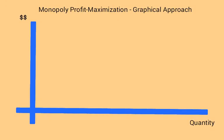Hi everyone. Earlier we looked at monopoly profit maximization by looking at a table. This time we're going to look at a graph and see how we can figure out what quantity the monopoly should produce in order to maximize its profits.